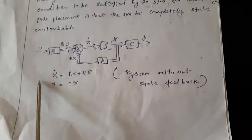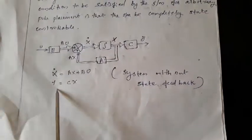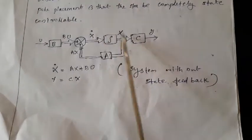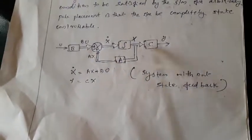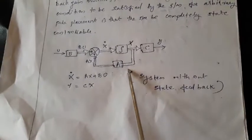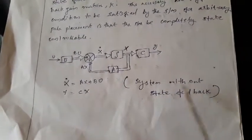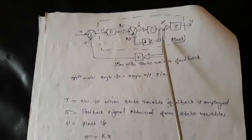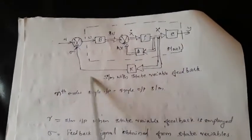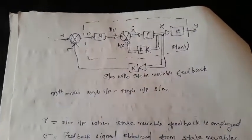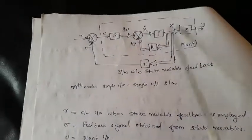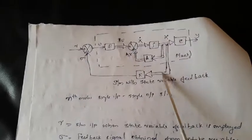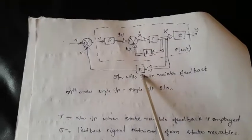See this block diagram. In this block diagram, we are representing a system by the state model: x-dot = Ax + Bu, y = Cx. This is the original system. We are going to improve the performance of this system using state feedback. Now let us see the system with state feedback — the state variable is taken to the input side as feedback through a state feedback gain matrix K.